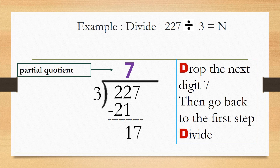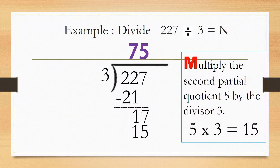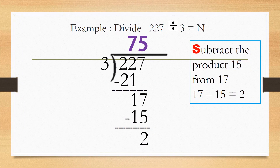Go back to the first step D, which is divide. Divide the combined digits 17 by 3. 17 divided by 3 equals 5. Hint: if you skip count by 3, there are 5 counts and the number nearest 17 but not greater than 17 is 15. Next, multiply the second partial quotient 5 by the divisor 3. 5 times 3 equals 15. Next step is S — subtract the product 15 from 17. 17 minus 15 equals 2.